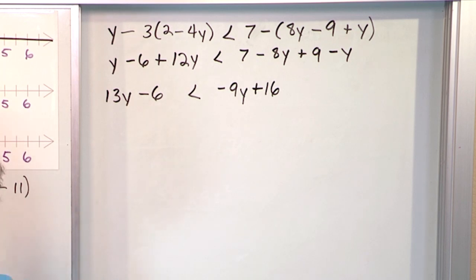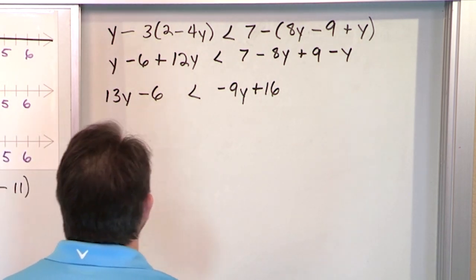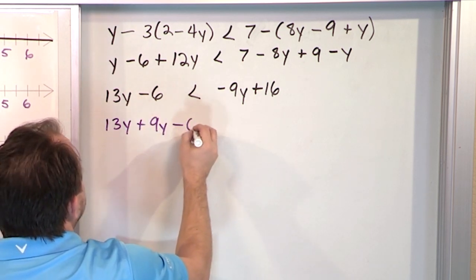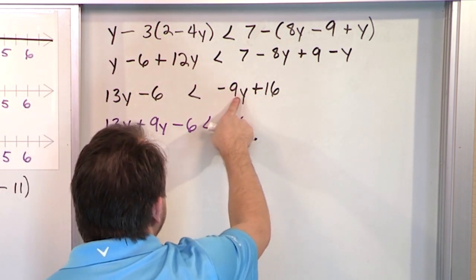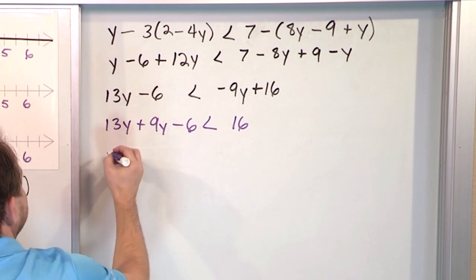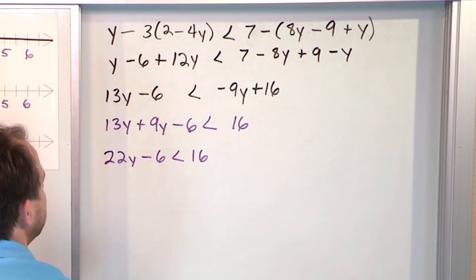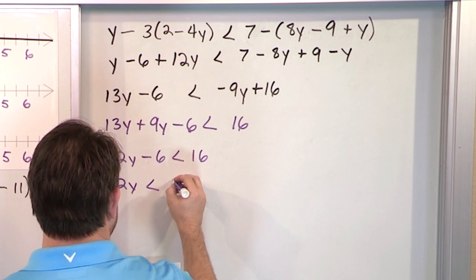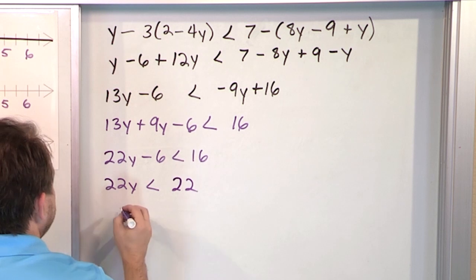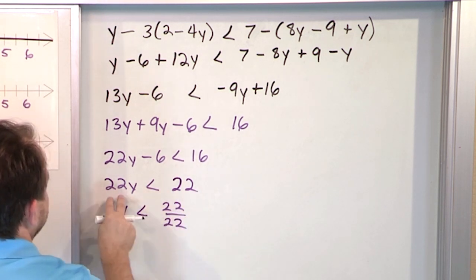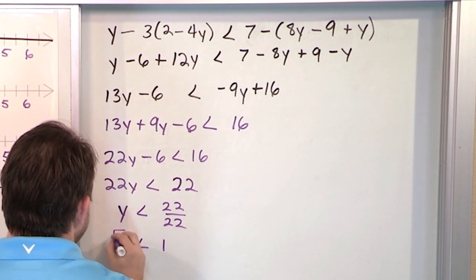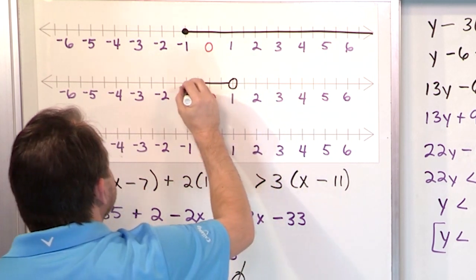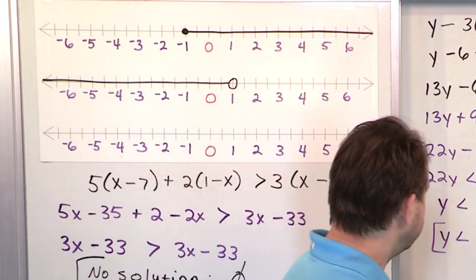We have 13y minus 6 less than negative 9y plus 16. Add 9y to both sides: 13y plus 9y is 22y, minus 6, less than 16. Add 6 to both sides: 22y less than 22. Divide both sides by 22: y less than 1. Since it's just less than — not less than or equal to — we put an open circle at 1 on the number line and shade all values to the left. So y less than 1.